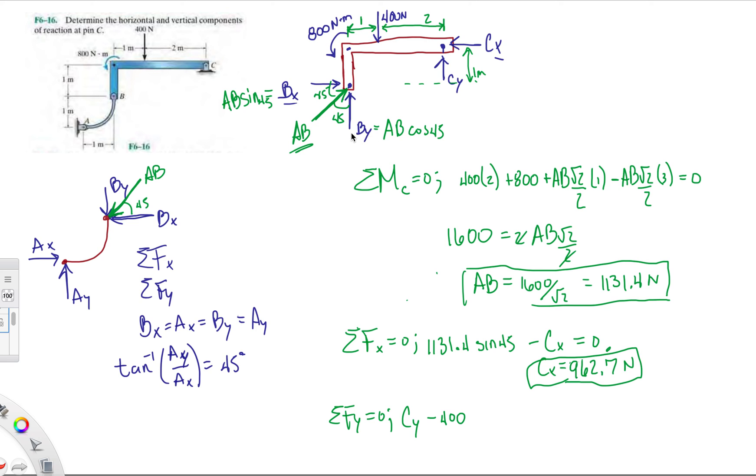And then that's CY. Moving everything to that side, you can tell we're gonna get a negative, so minus 1131.4 square root of 2 over 2 plus 400. That'll give us our answer when you plug into the calculator.